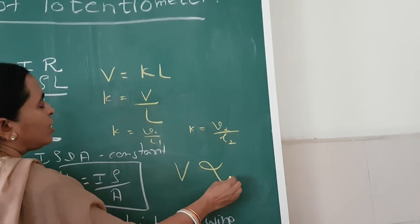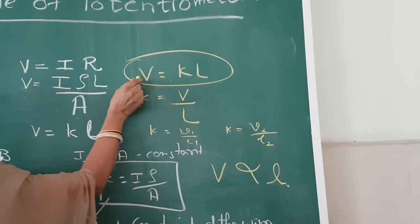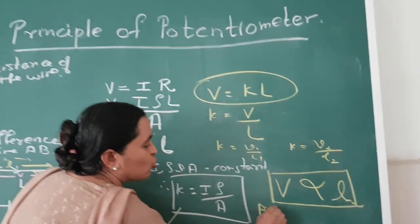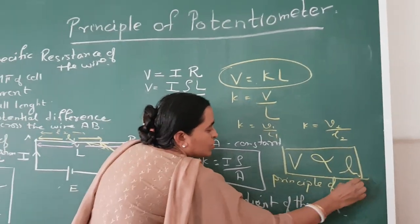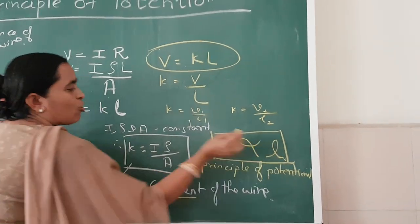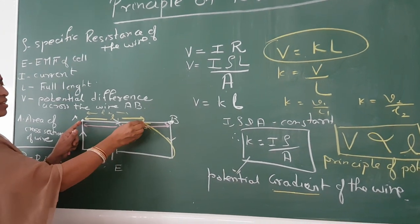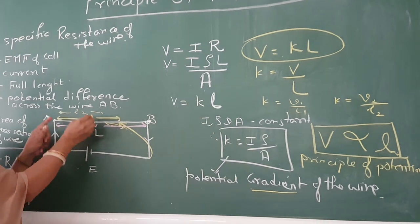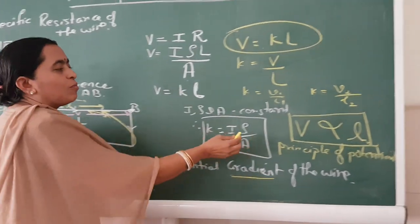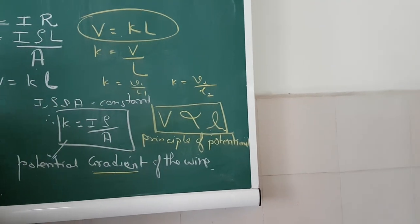So what do we find? V is proportional to L. From this equation, since A is constant, V is proportional to L. This is the principle of the potentiometer: the potential difference is directly proportional to the length of the wire. If the length is L1, the potential difference is V1; if the length is L2, the potential difference is V2, provided I, rho, and A are constants.